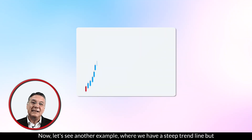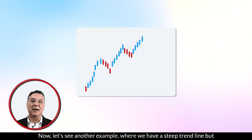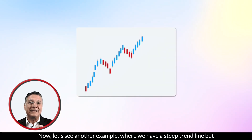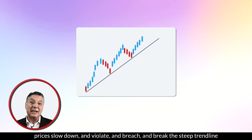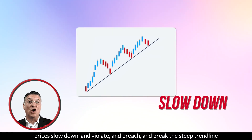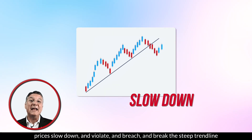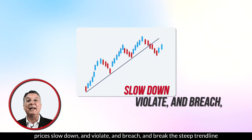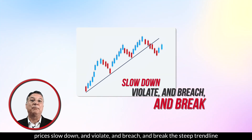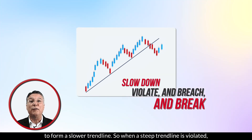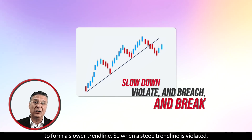Now, let's see another example where we have a steep trend line, but prices slow down and violate, breach, and break the steep trend line to form a slower trend line.